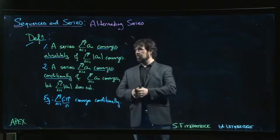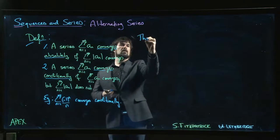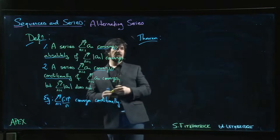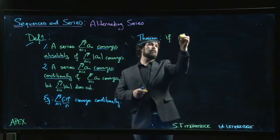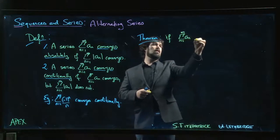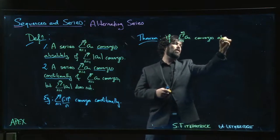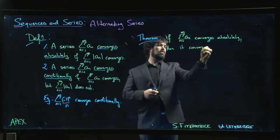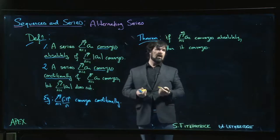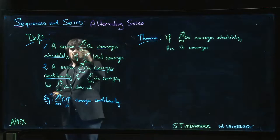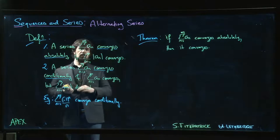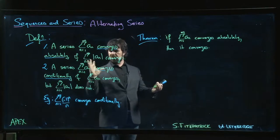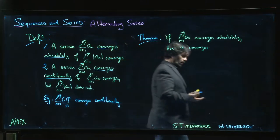The main result on conditional versus absolute convergence is a theorem. You can maybe guess based on the definition: if a series converges absolutely, then it just converges — full stop. In other words, if the series with absolute values converges, then the corresponding series without absolute values will also converge. So absolute convergence is a much stronger condition than simple convergence.